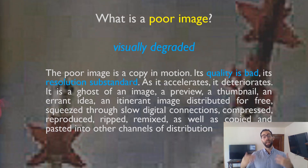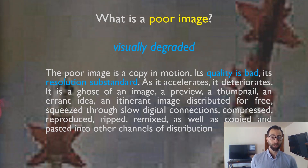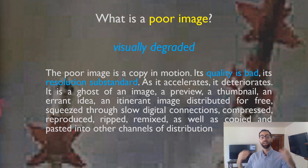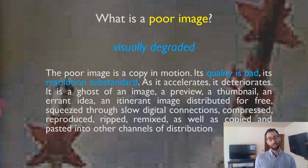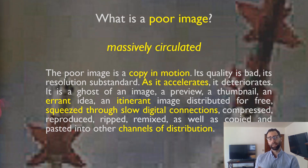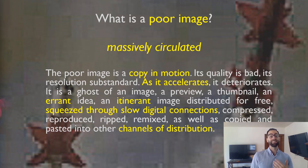There are three central aspects of what makes a poor image a poor image on Steyerl's account. The first, most obviously, is visual degradation. She says a poor image is of bad quality and its resolution is substandard, kind of like the image you're seeing in the background right now. Something that seems markedly digital, pixelized, and visually compressed through compression algorithms.